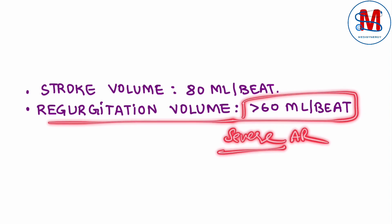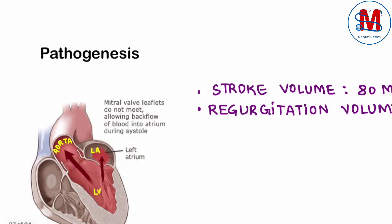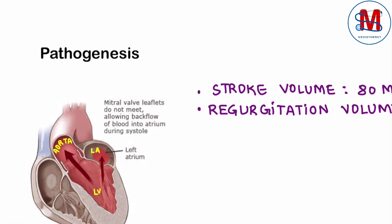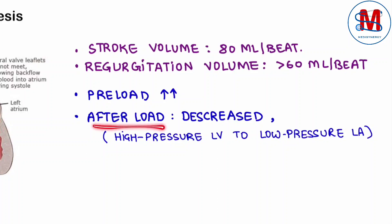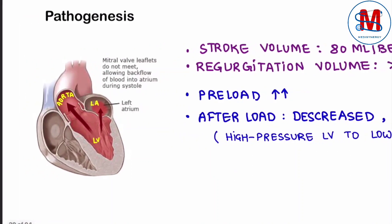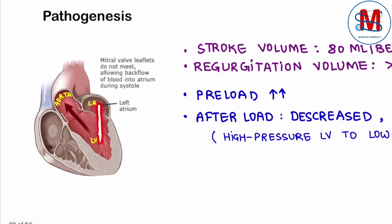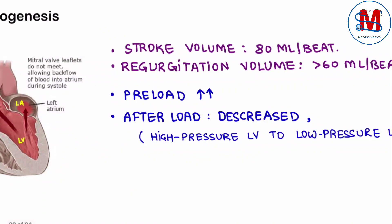So 60 ml per beat of blood goes back to the left atria. If we talk about volume overload, then preload increases and afterload decreases. When the left ventricle empties, some portion goes to the left atria — a low pressure chamber — so the afterload will be less.